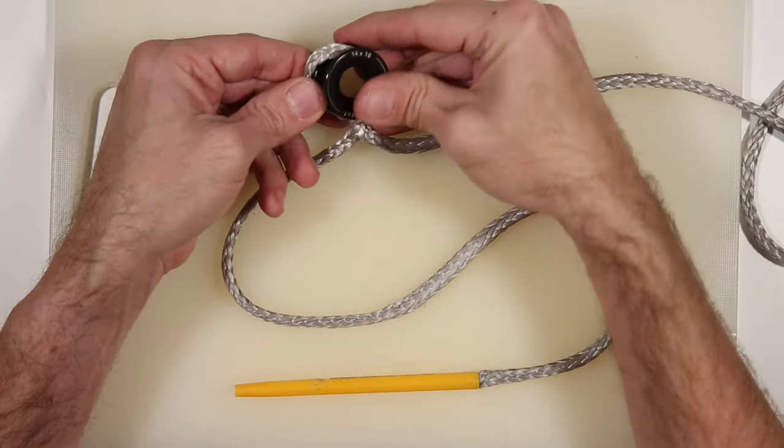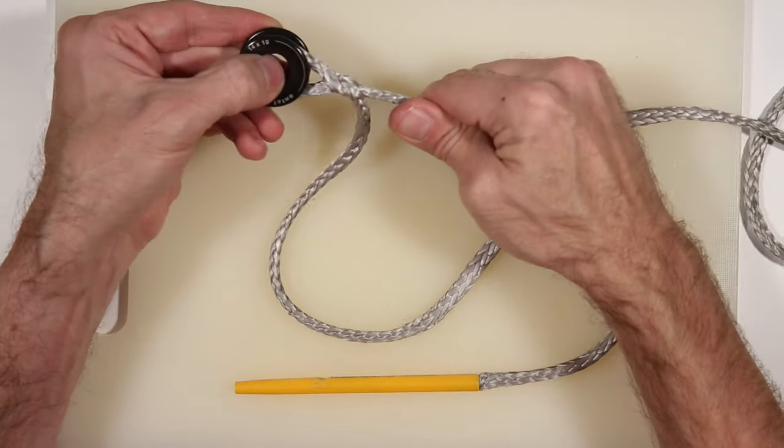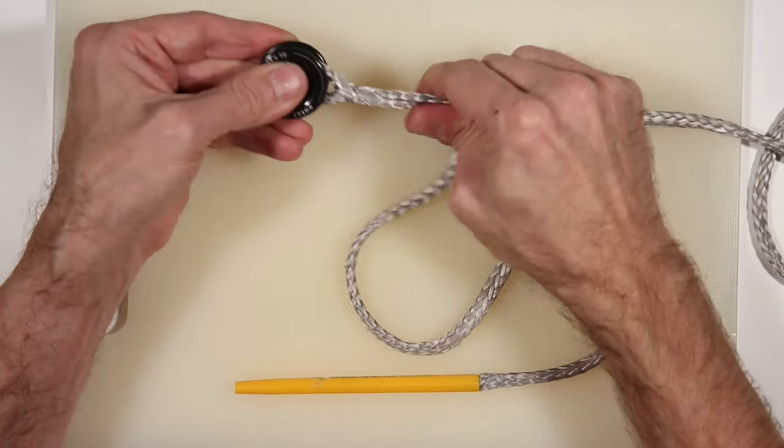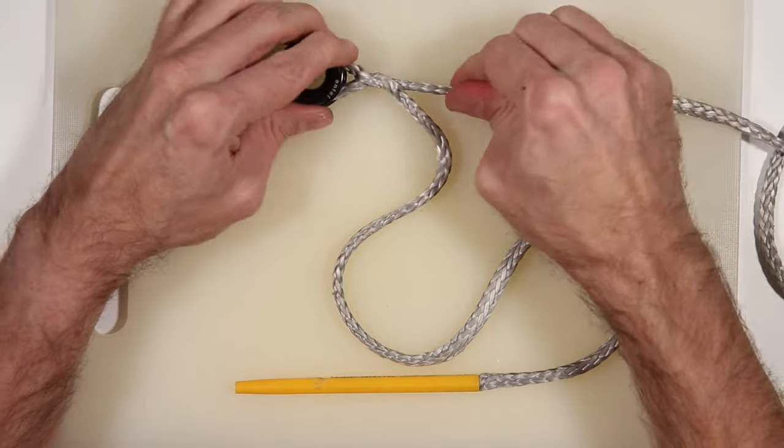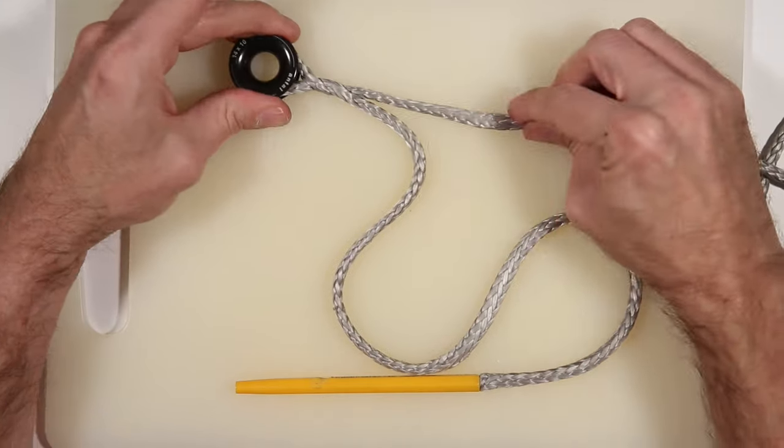At this point, it's worth making sure you can get the loop over the low friction ring. Just pull the ropes to make sure the splice is nice and tight.